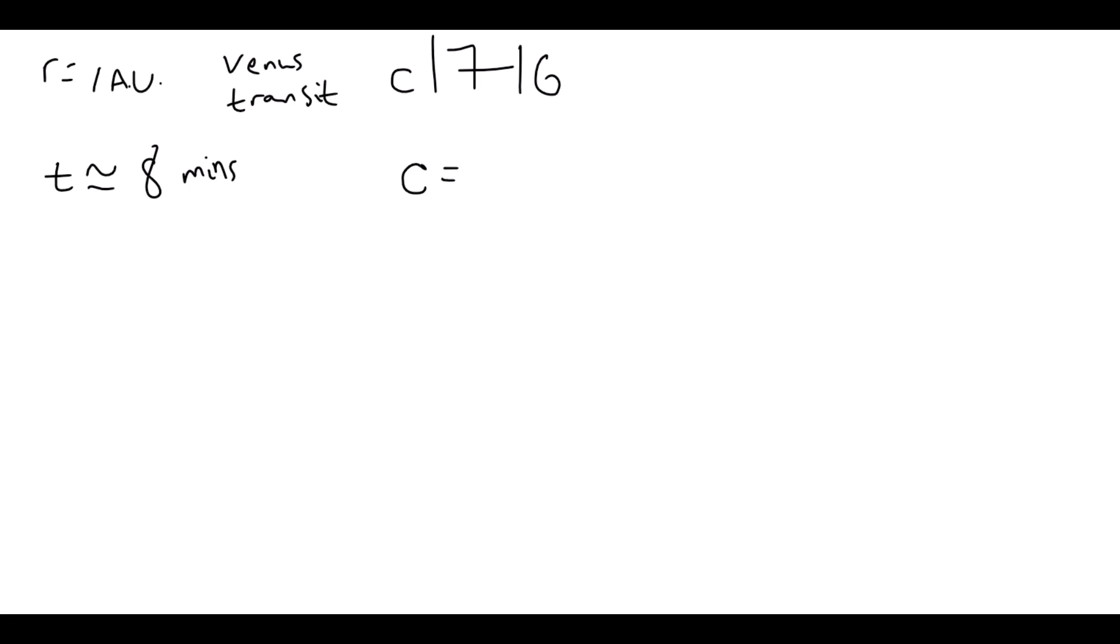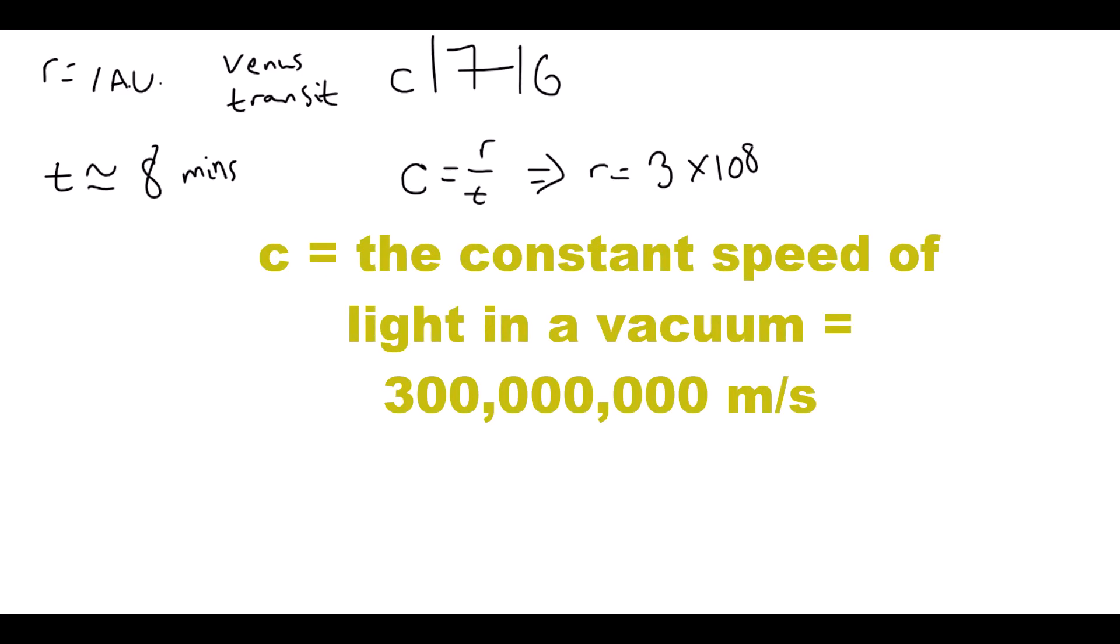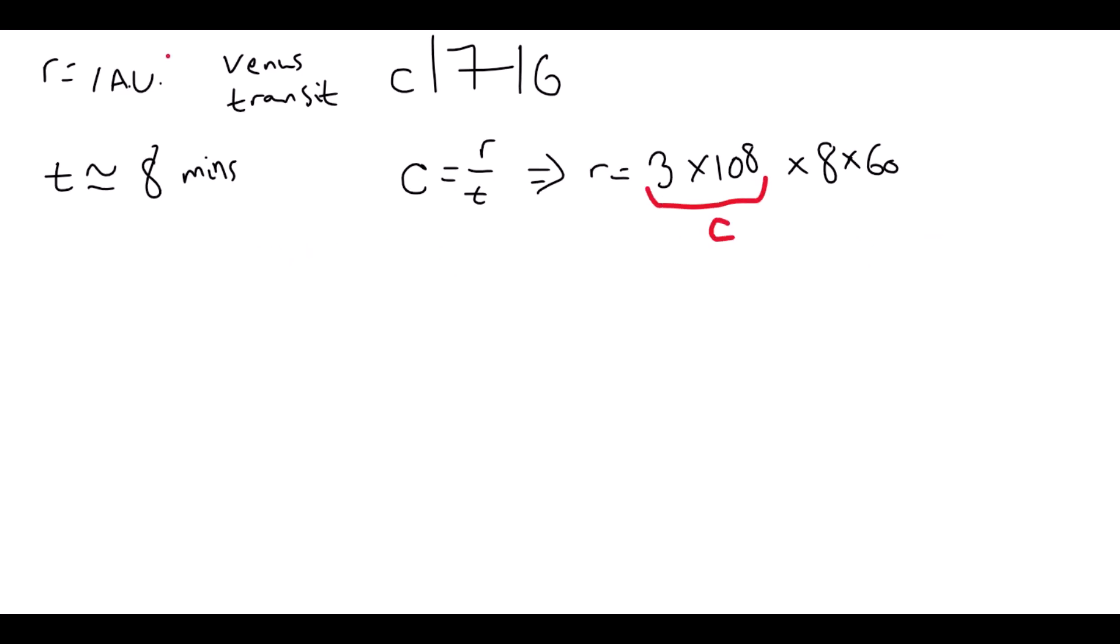As light travels at a constant 300 million metres per second in a vacuum and takes 8 minutes to reach Earth, we can go back to our speed equals distance divided by time formula and rearrange for the distance. C is the constant speed of light, and being careful to convert from minutes to seconds grants us a value of r equaling 1.5 times 10 to the 11 metres to two significant figures. So that's 15 followed by 10 zeros.